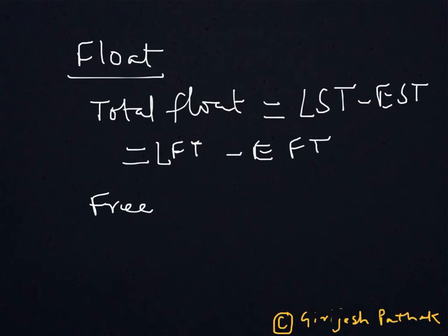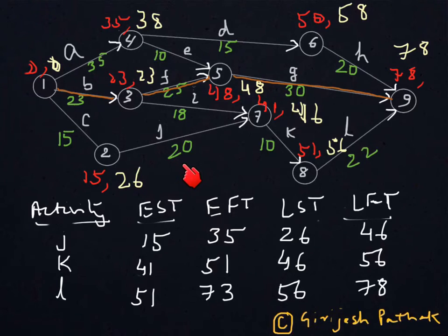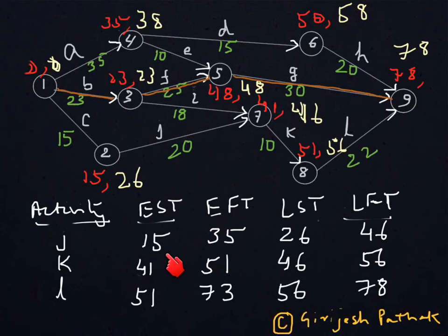Let us see this in more detail with the data. Free float means that the subsequent activity's earliest start time should not be disturbed by this activity. Take the example of activity J. The earliest start time of J is 15 and the latest start time is 26, meaning 26 minus 15 gives 11 days as total float for activity J.